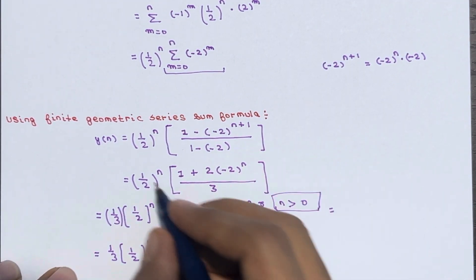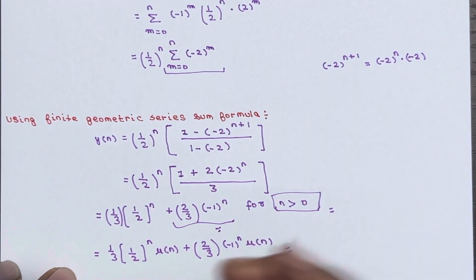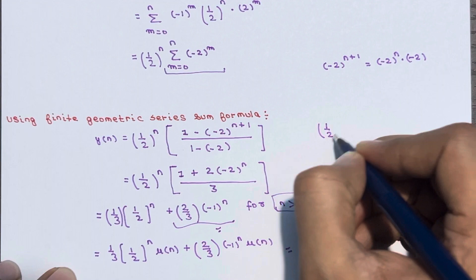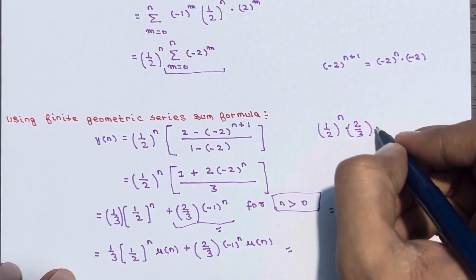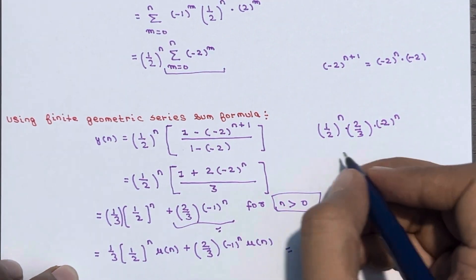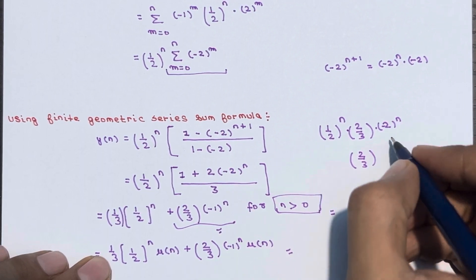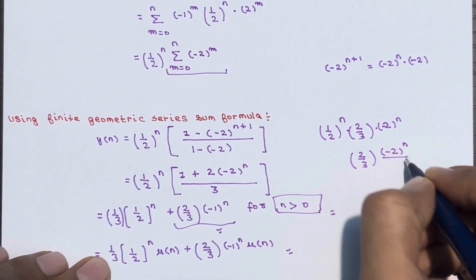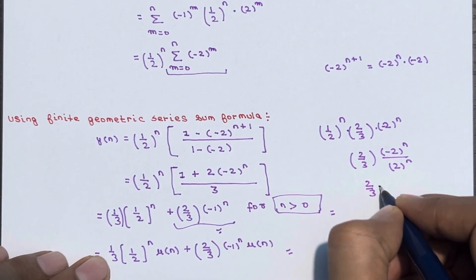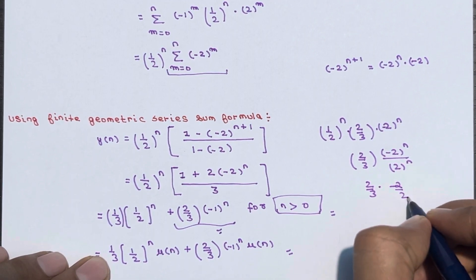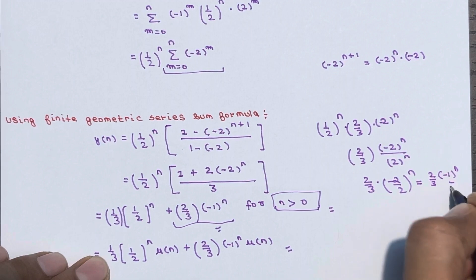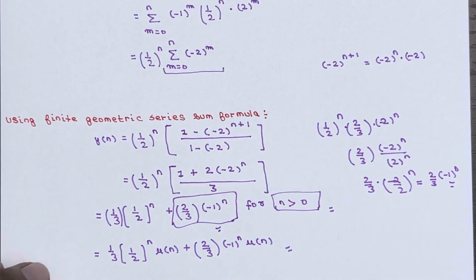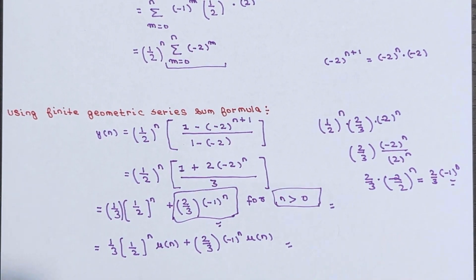To clarify how (-1)^n arises: when you multiply (1/2)^n with (-2)^n, the 2^n in the denominator and the 2^n in (-2)^n cancel, leaving (-1)^n. If you have any doubt you can ask in the comment section, and don't forget to subscribe to our YouTube channel. Thanks for watching.